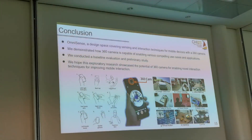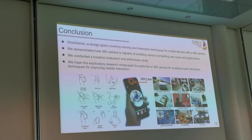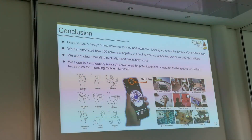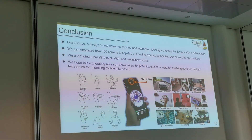Let me conclude the talk. We introduced OmniSense, the design space for mobile devices with a 360 camera, and demonstrated how it is capable of enabling various use cases and applications. Although not all applications proved to be useful, we hope this research showcases the potential of 360 cameras for enabling novel techniques that can improve mobile interactions.